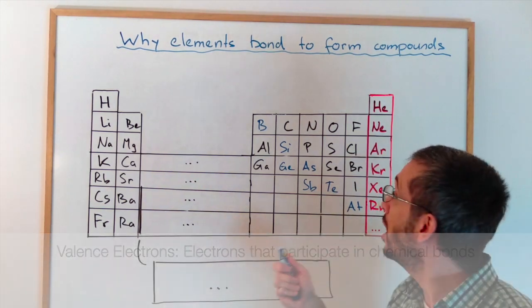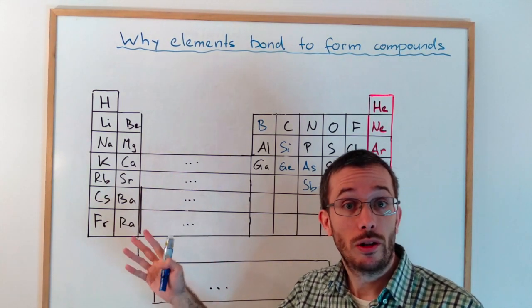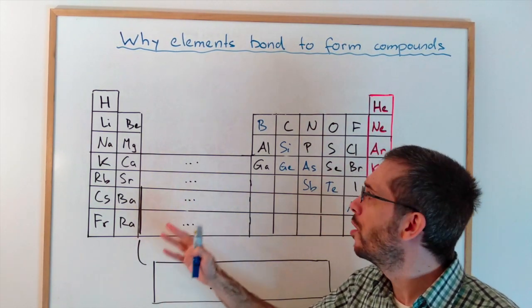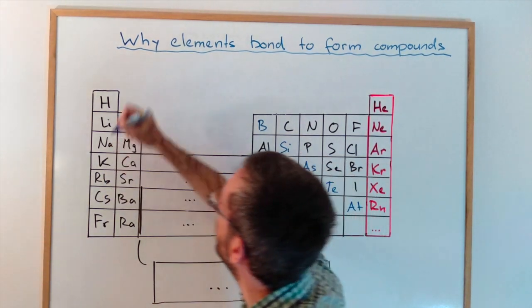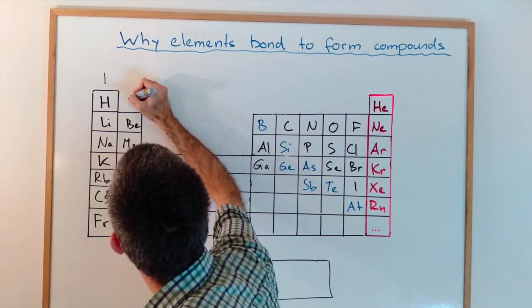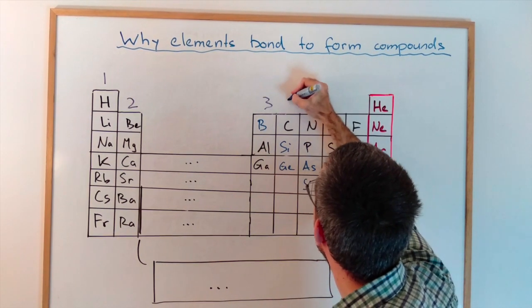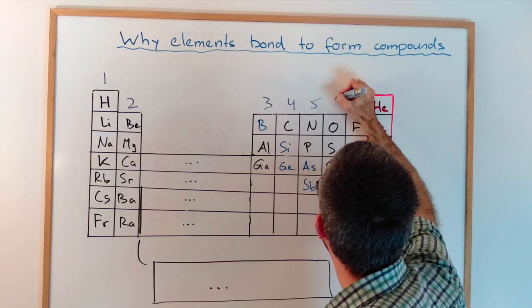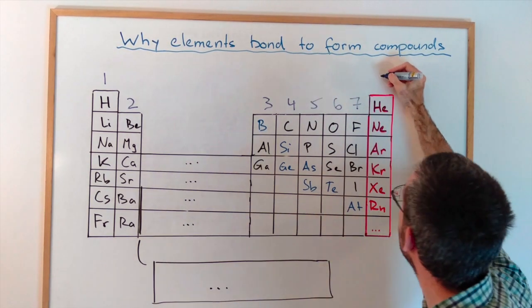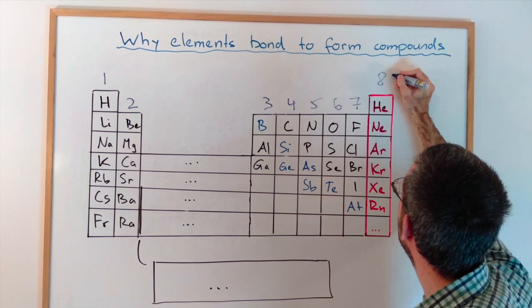In our periodic table, it is quite simple to figure out the number of valence electrons. Group 1 has 1 valence electron, group 2 has 2. This one here has 3, 4, 5, 6, 7 and 8 for the noble gases except helium, which only has 2.